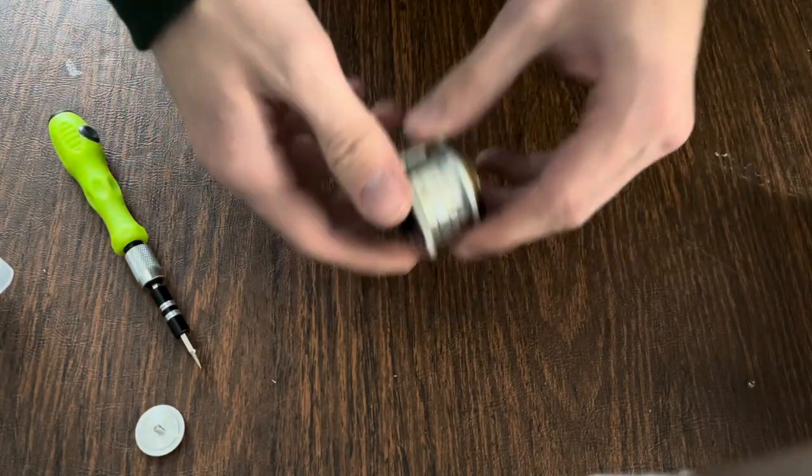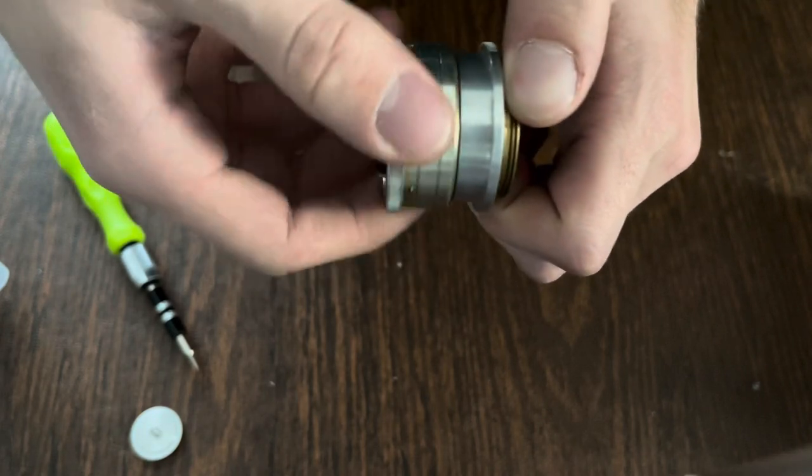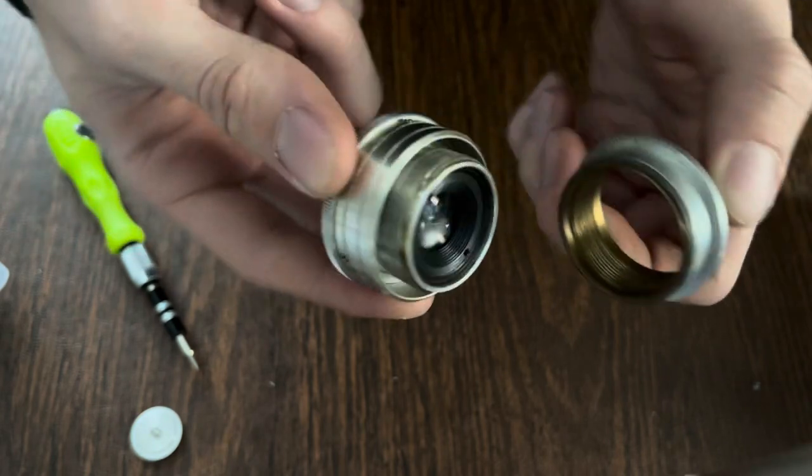Now grab the brass here and rotate slowly. The lens comes apart.